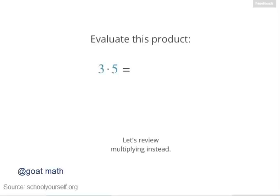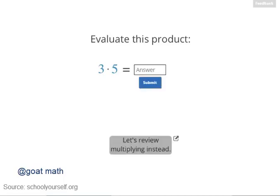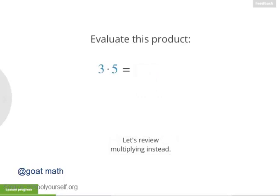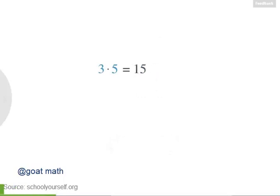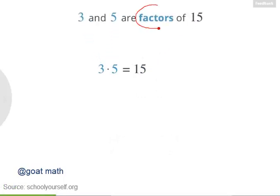To get started, try evaluating this product. What's 3 times 5? Exactly, 3 times 5 is 15. Now this means that 3 and 5 are factors of 15.